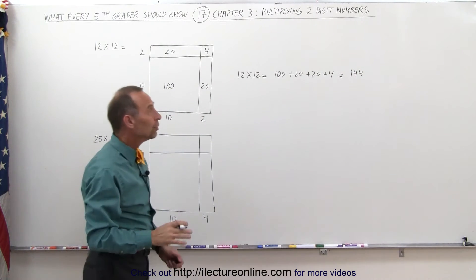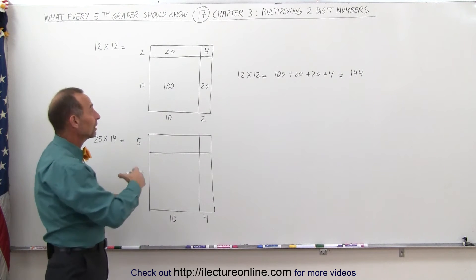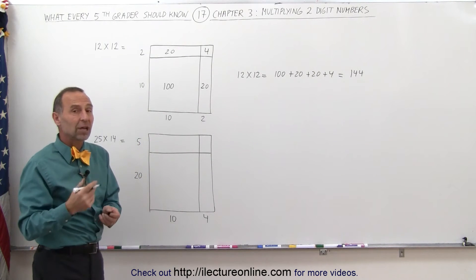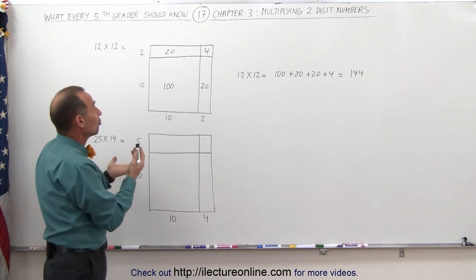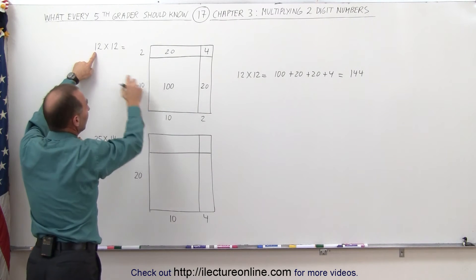That's the reason why we do that. Not only to come up with a clever neat technique to enable us to do it easily, it also helps us understand what multiplication with two-digit numbers actually is. It's multiplying 10 times 10, which is 100.